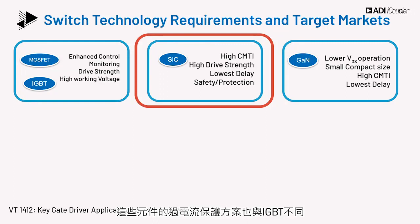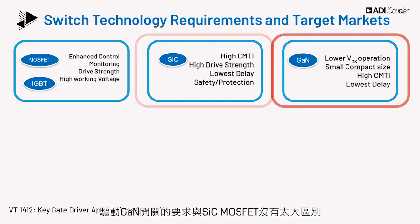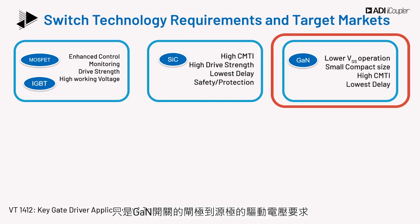Overcurrent protection schemes for these devices are also different from IGBTs. The requirements for driving a GaN switch aren't too dissimilar to that of the SiC MOSFETs, except that the gate to source drive voltage requirement of the GaN switches is generally lower than the SiC switches.